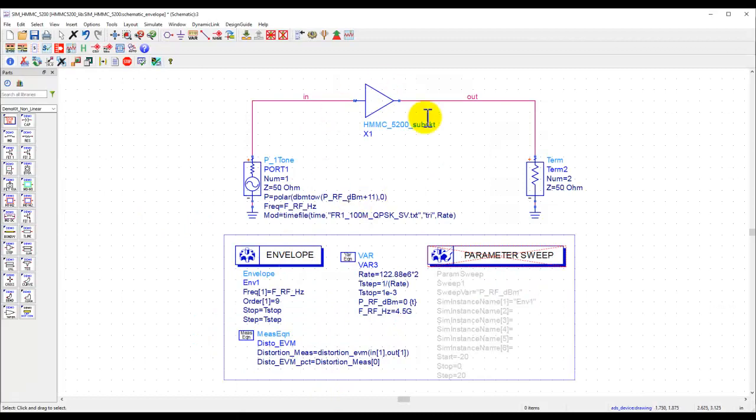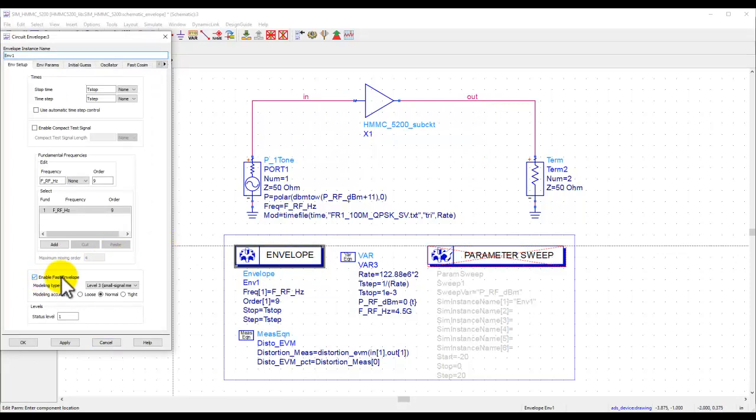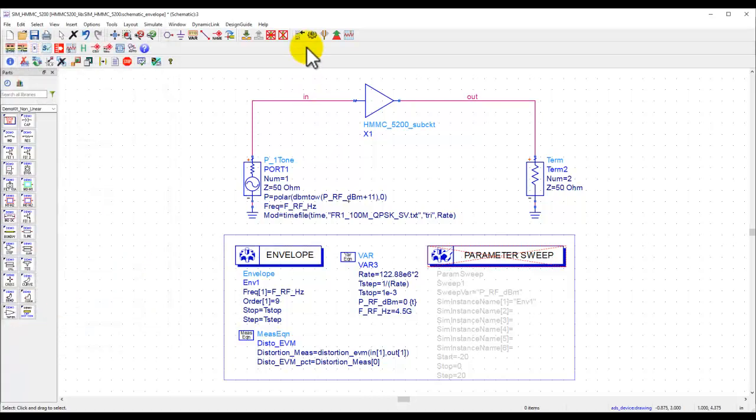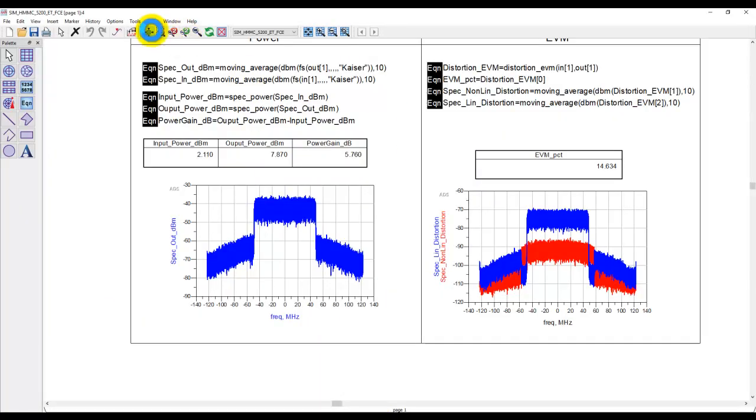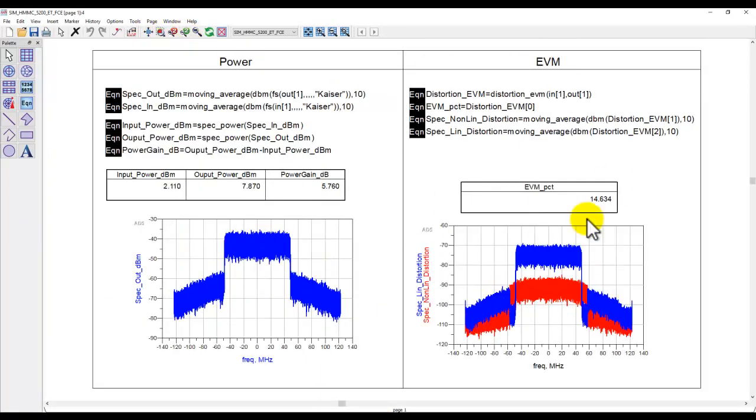It's actually very simple. You need to have an envelope-based simulation test bench. Inside envelope controller, you can enable fast envelope and select the right level for your modeling depending upon your circuit as well as the bandwidth you are looking for. Once you set this up, you run simulation, you can observe the modulated signal performance as you would typically see. In this case, you can see with level three FCE model, I have an EVM of around 14.6%, and here is a nonlinear spectrum out of it.